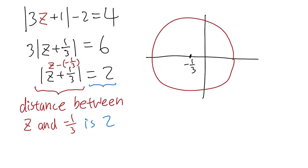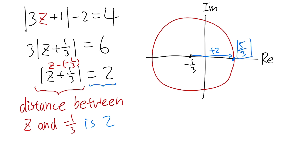We're on the complex plane, so this is the real axis and this is the imaginary axis. We can also recover the real solutions from here — they lie on the real axis. Starting at negative one-third and going right two units gives us 5/3, and going left two units gives us negative 7/3. Both are real numbers.